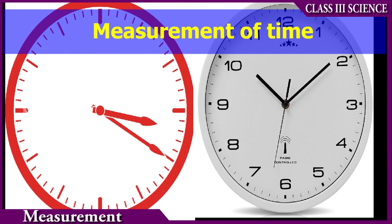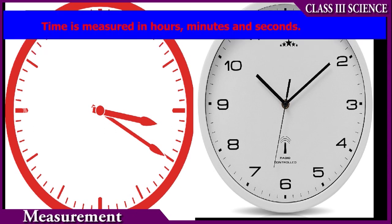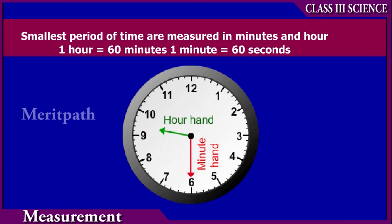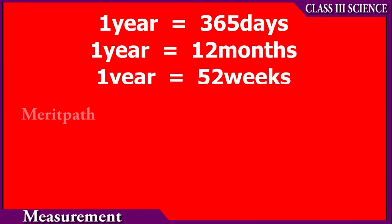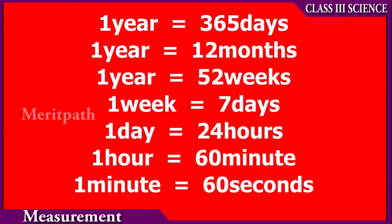Measurement of time: time is measured in hours, minutes, and seconds. One hour is equal to 60 minutes. One minute is equal to 60 seconds. One year has 365 days. One year is equal to 12 months, and also equal to 52 weeks. One week is equal to seven days. One day is of 24 hours.